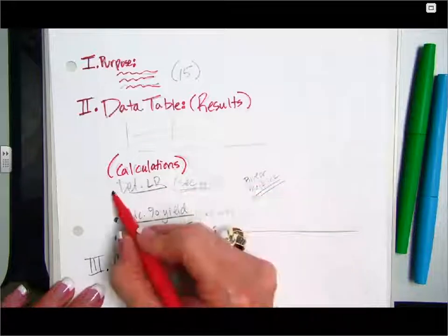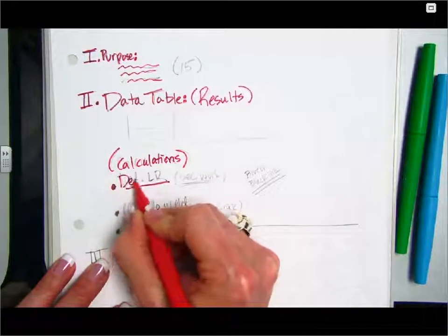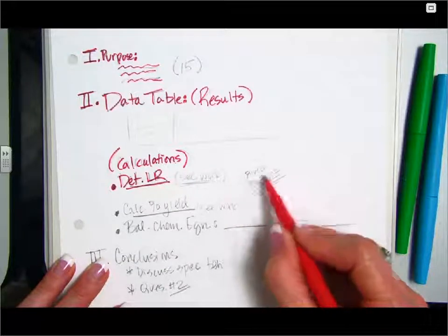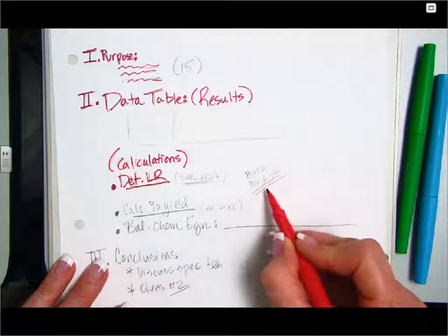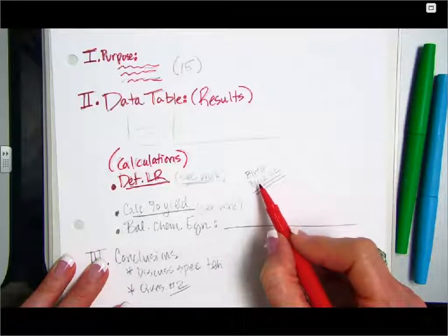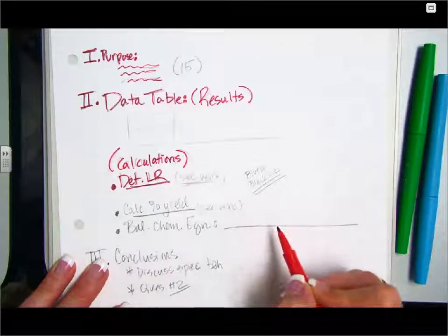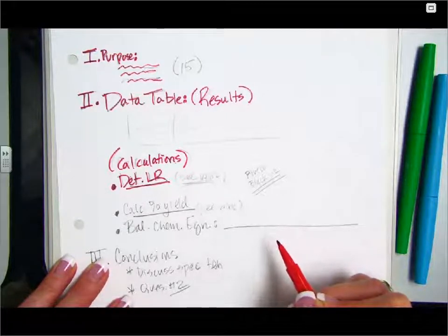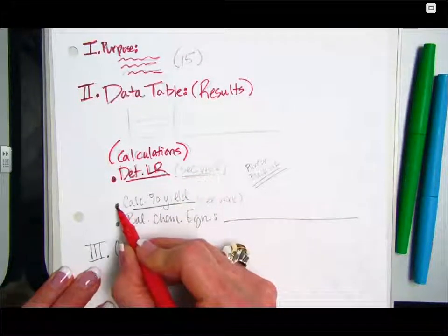So you would want to make sure that you determine your limiting reactant and show that calculation. The work, for any calculations, you can write that in either blue or black ink and then scan it into your lab. For the labs that you turn into me in class, you can actually write it on that lab for the hard copy you give me. But in your Google Doc, you can scan it in and then attach it in Google Classroom.